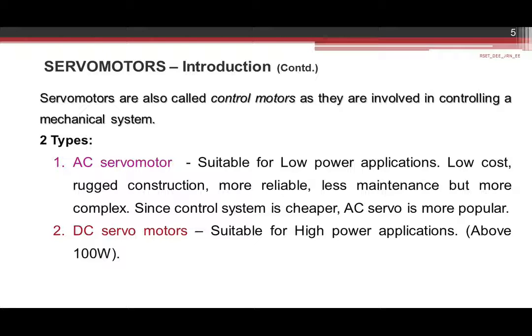Servo motors are also called control motors as they are involved in controlling a mechanical system. Two types are: AC servo motor and DC servo motors. AC servo motors are generally suitable for low power applications. Some advantages of AC servo motors are low cost, rugged construction, more reliable when compared to DC servos, less maintenance required. Since the control system is cheaper, AC servo motor is more popular than DC servo motors.